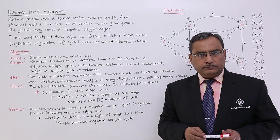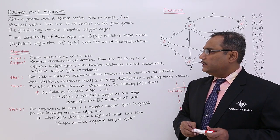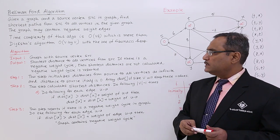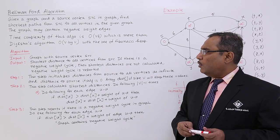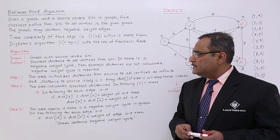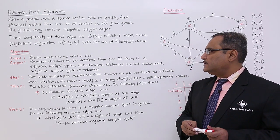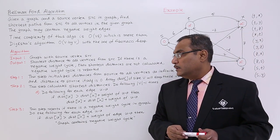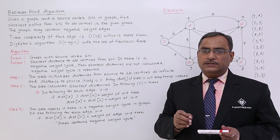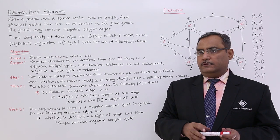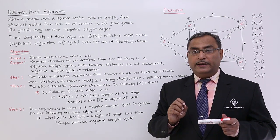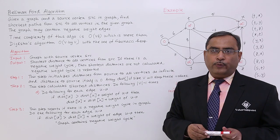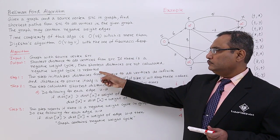The input to the algorithm is the graph along with the source vertex SRC. The output is the shortest distance to all vertices from SRC. If there is a negative weight cycle, then the shortest distances are not calculated — a negative weight cycle is reported instead.